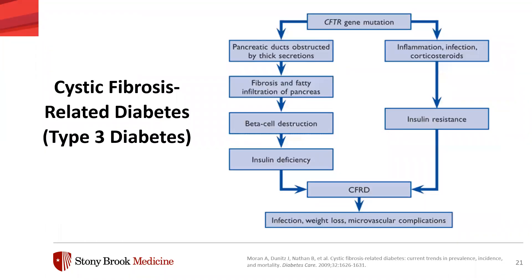One of the most common comorbidities in cystic fibrosis patients is cystic fibrosis-related diabetes, which further complicates CF and leads to poor nutritional status, worsened lung function, and increased mortality. This is known as type 3 diabetes — a gene mutation blocks up the pancreatic ducts, causing fibrosis and fatty infiltration leading to beta cell destruction and insulin deficiency. Currently, insulin is the standard medical treatment. Many reports indicate that insulin therapy stabilizes lung function, improves nutritional status, improves A1C control, reduces pulmonary exacerbation rates, and decreases mortality.